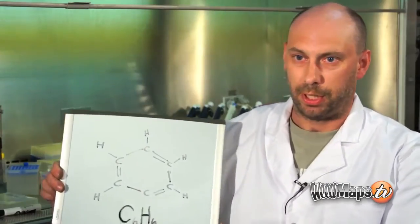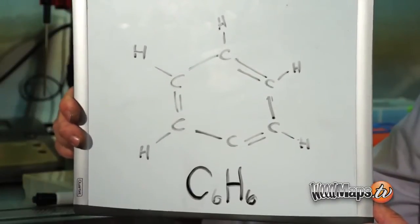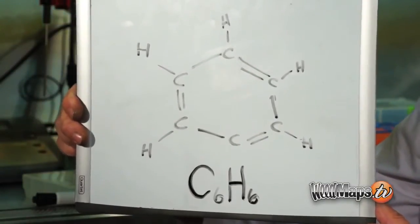The main terpenoids in cannabis are myrcene, limonene, caryophyllene, and pinene. Additionally, they all contain this kind of structure—the most simple aromatic compound, which we call benzene. It has the formula C6H6.